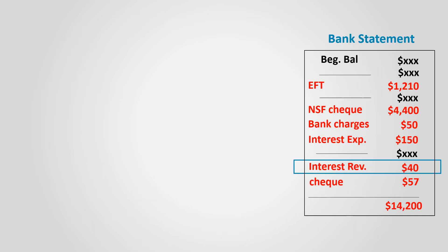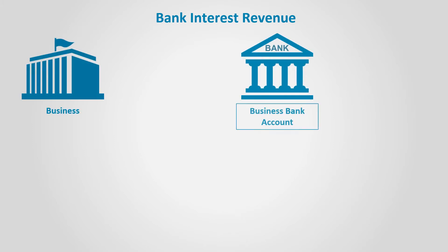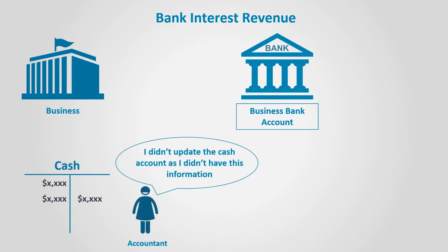Interest revenue. Sometimes the bank will add interest on a savings account. The interest is added, but the business doesn't get the exact amount except with the bank statement. At that time, the accountant will add it to the cash balance.